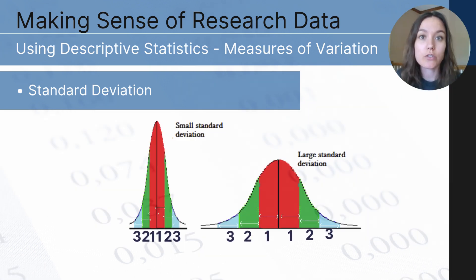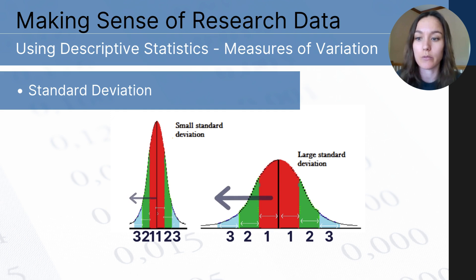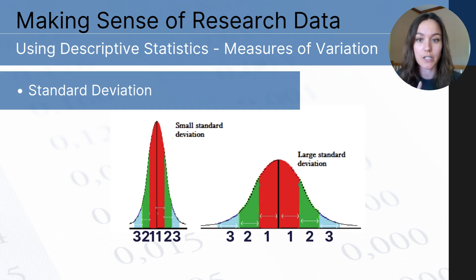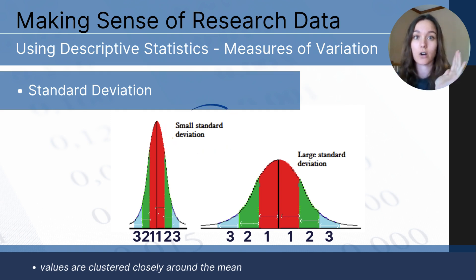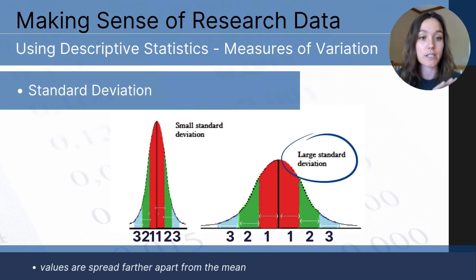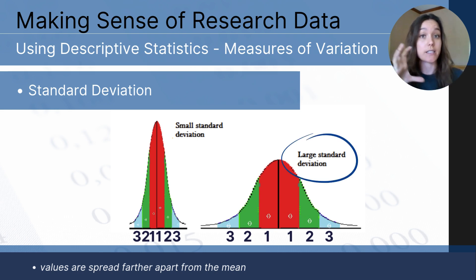Notice these two distributions of data. Each distribution is divided into six equal sections — three above the mean and three below. But visually, you can tell that the standard deviation is different. In the first set, it's smaller, which represents that all values in the data set are closer together. In the second distribution, the standard deviation is larger, which represents that the data set is more spread apart.